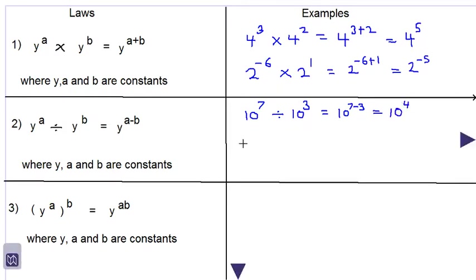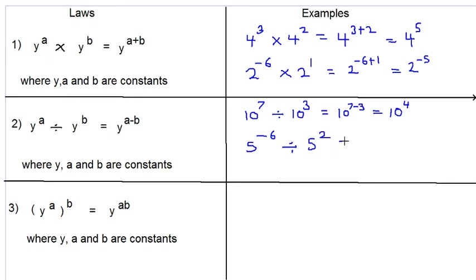Let's look at another example. 5 raised to the power minus 6 divided by 5 raised to the power 2 would be equal to 5 to the negative 6 subtract positive 2, which is 5 to the power negative 8.